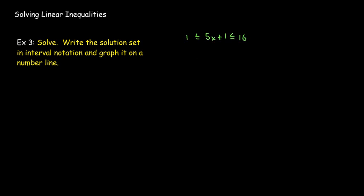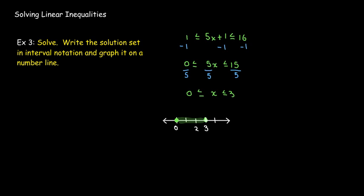Now we have a three-part inequality. The goal is to isolate the variable in the middle. We start by subtracting 1 from each part, then divide all three parts by 5. That gives us 0 less than or equal to x less than or equal to 3 — all numbers between 0 and 3, including both endpoints. So both dots are solid, and in interval notation we have square brackets on both ends.